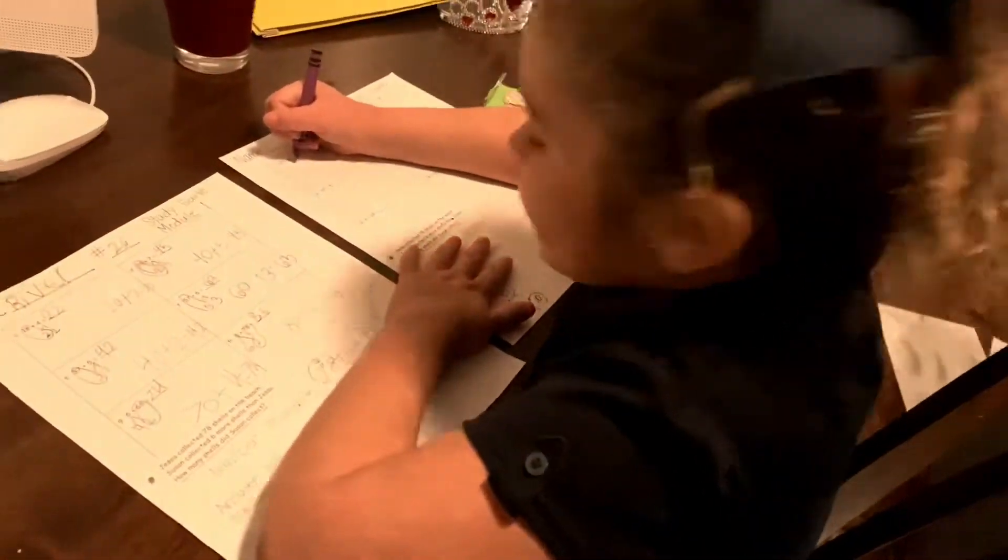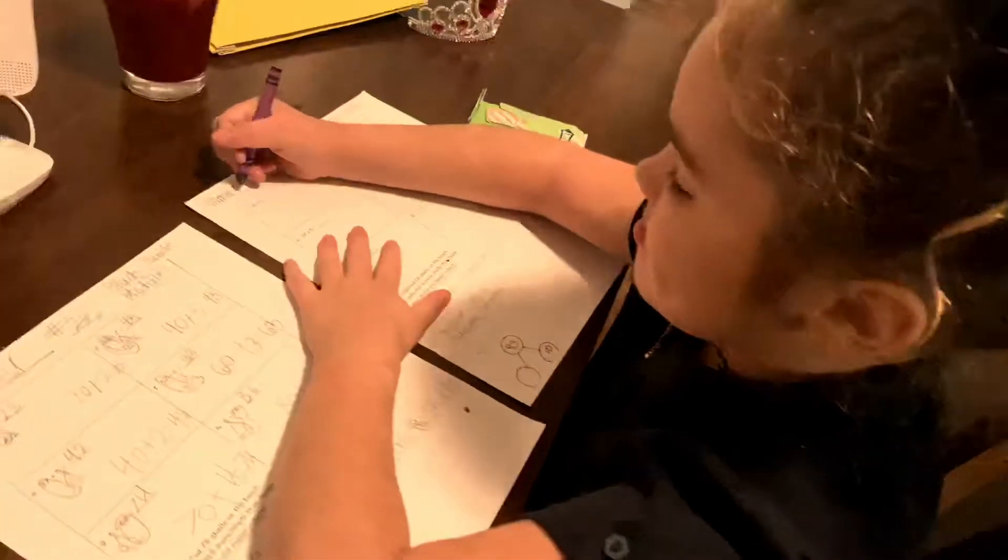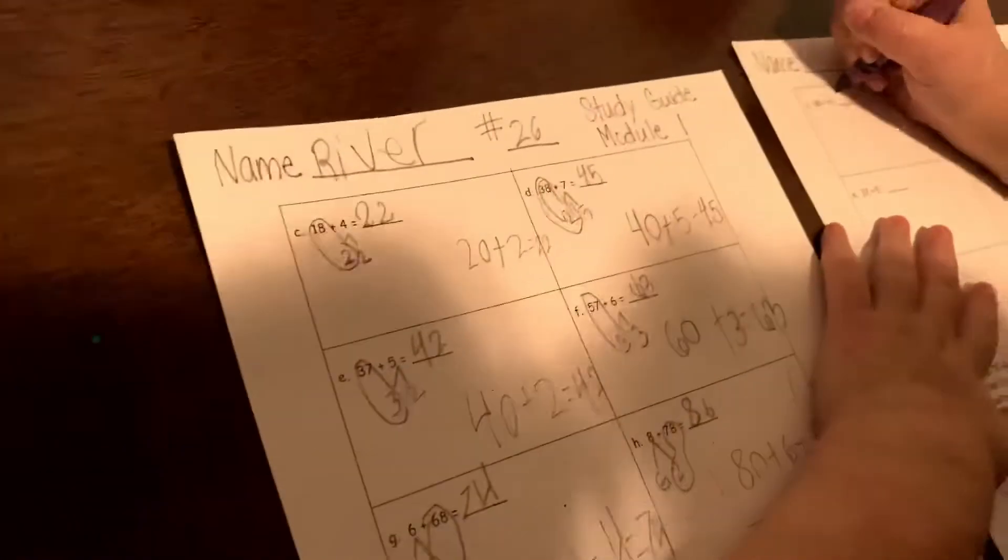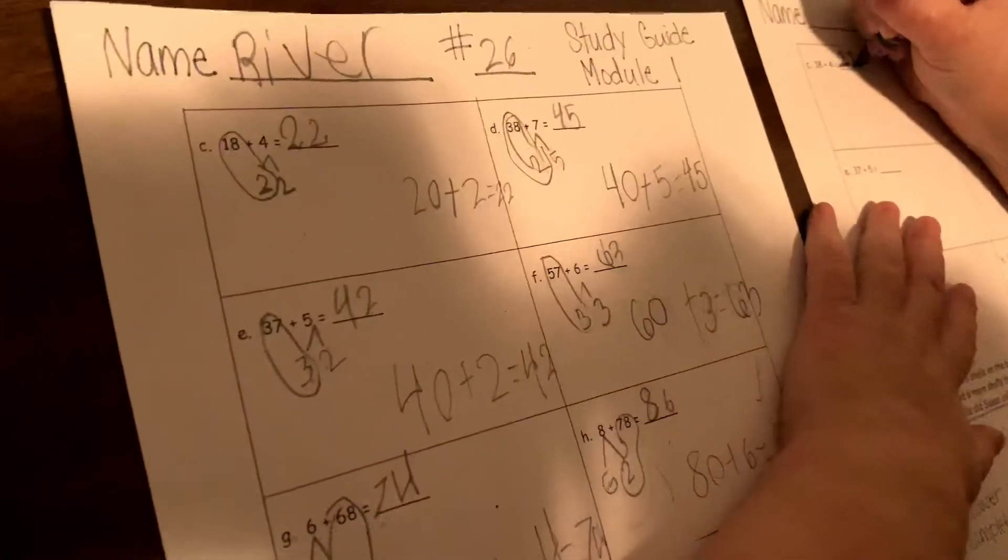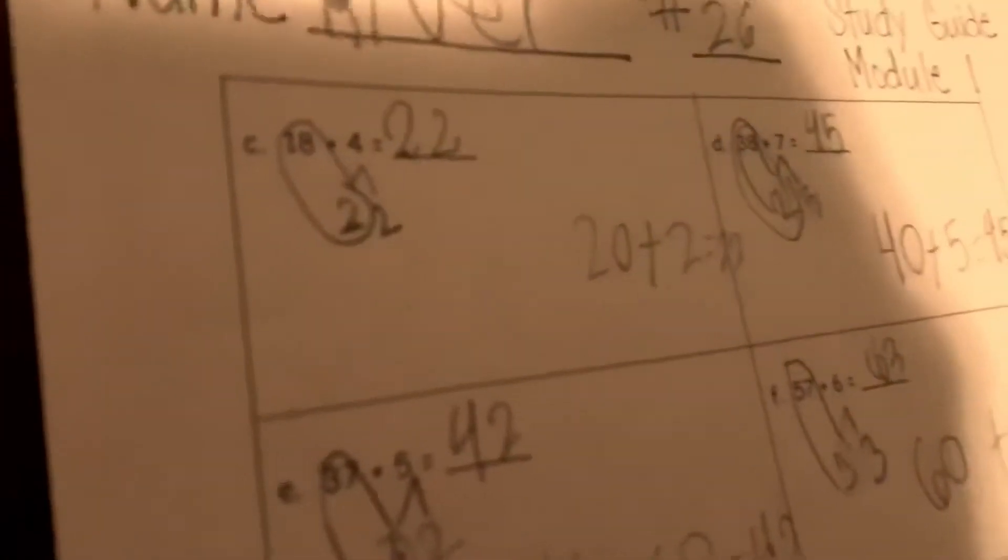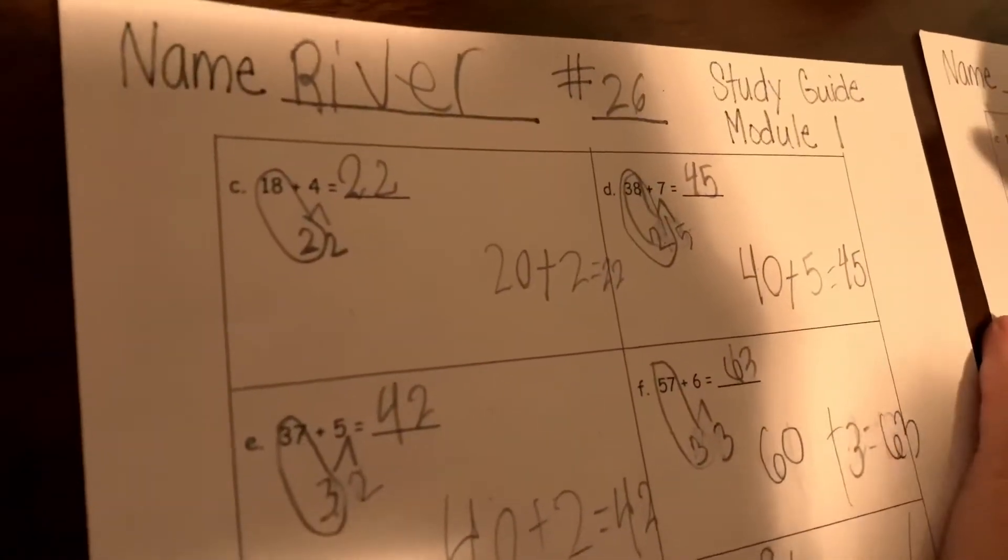All right, this is my daughter River. River, say hello. Hello. River is doing her homework, this is her math homework. This is the Common Core math homework. So you can see 18 plus 4 is 22.